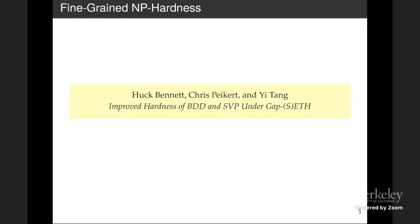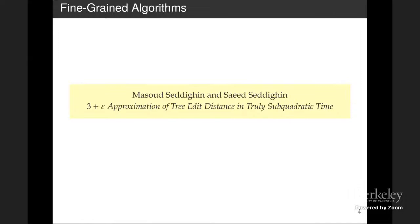As fine-grained complexity developed, the emphasis on sub-quadratic algorithms and sub-quadratic approximation algorithms gained more punch because now we had tools to prove hardness results. In this next talk, we'll see how, for a natural generalization of edit distance — tree edit distance — there is a truly sub-quadratic three-approximation, or three-plus-epsilon approximation algorithm. This is truly interesting because we always have the question of whether there's a lower bound or an algorithm, and in this case there is an approximation algorithm.